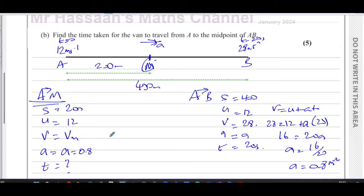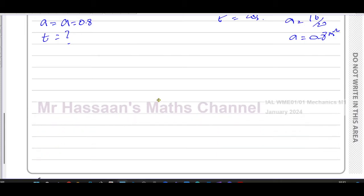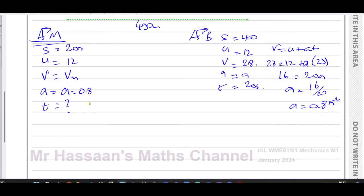So we can find the time, that's what we're looking for. Now we can find the time because we have enough information. Which formula we can use? S equals UT plus a half AT squared. We could use that to find the time. So we have S equals UT plus a half AT squared. S is 200, U is 12, and a half times 0.8 times T squared. So we've got basically 200 equals 12T plus 0.4T squared.